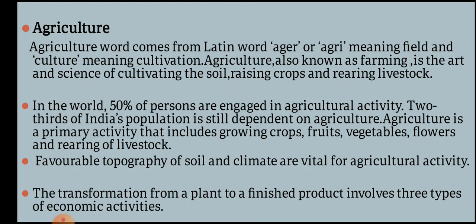Around 50% of the world's population is engaged in agricultural activity. So far as India is concerned, two-thirds of the Indian population is still dependent on agriculture. Agriculture is a primary activity.